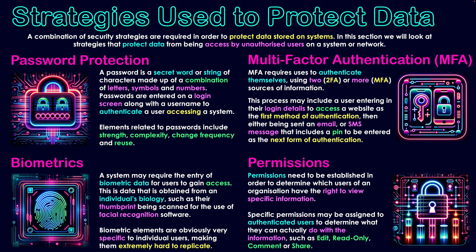The final category, linked to these authentication methods, is permissions, which need to be established to determine which users of an organization have the right to view specific information. Being an authenticated user and accessing a system is one thing, but being able to see all data within that system is another. Logins and accounts should be mapped to specific users and their work tasks within an organization — not just for privacy, but to control who can do what with data. For example, a user might have the right to view records but not to edit them, with editing privileges assigned to managers.